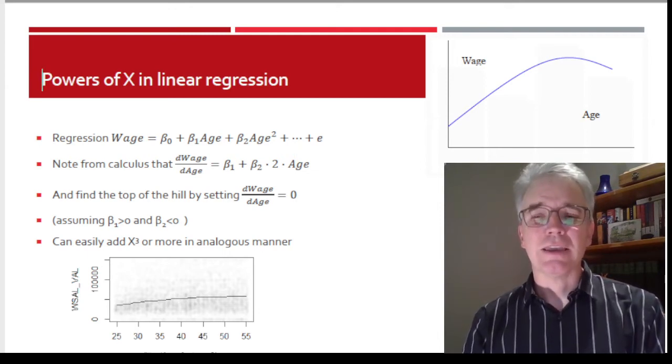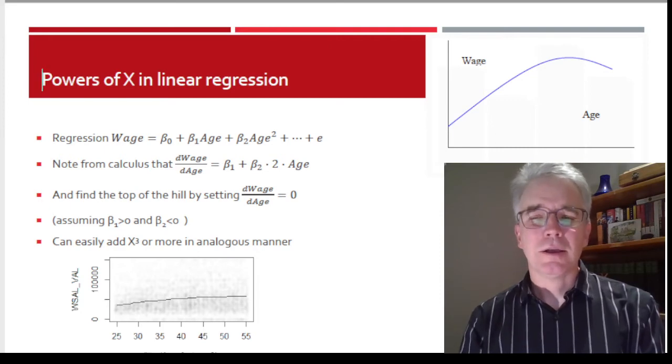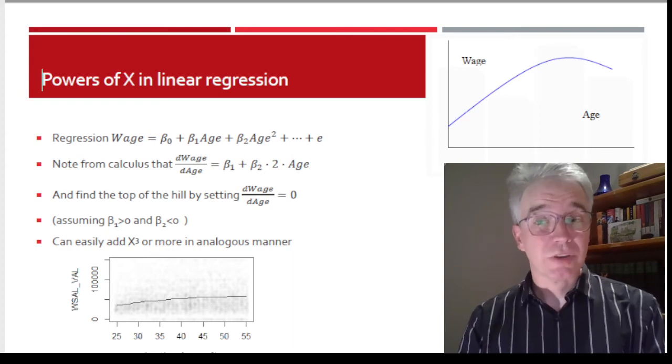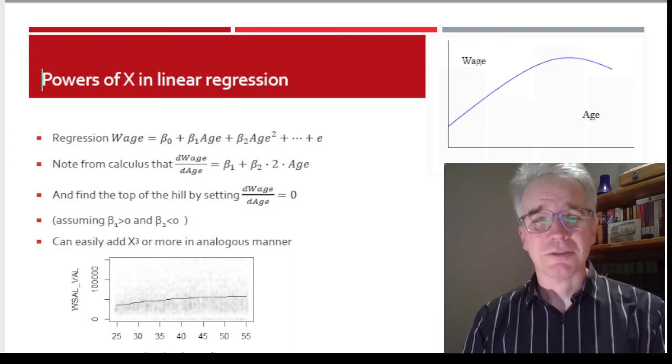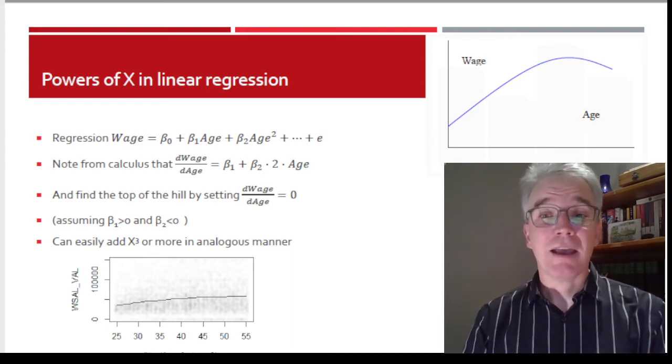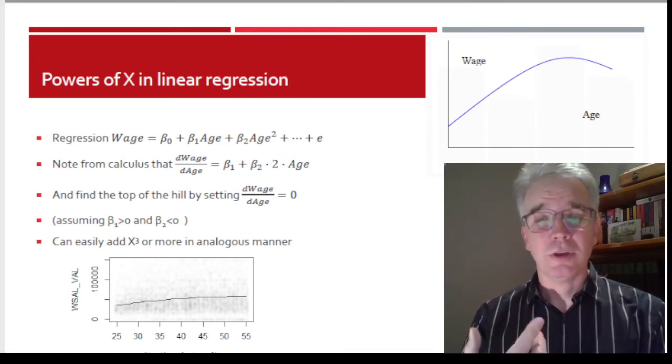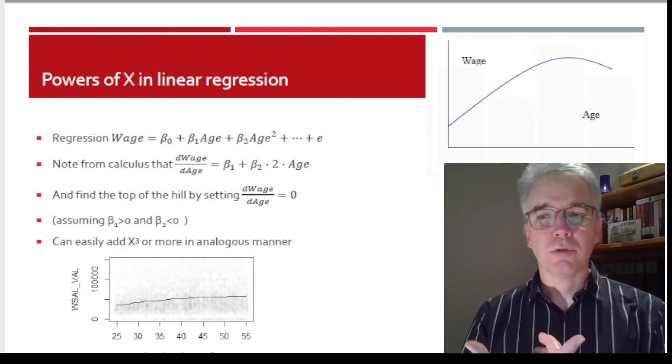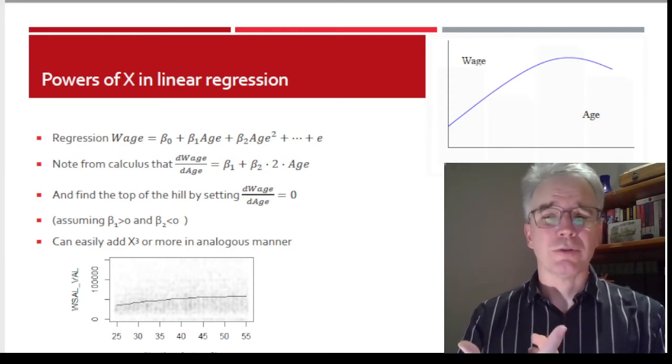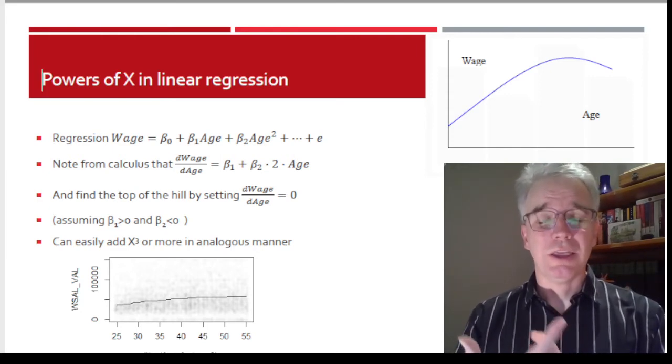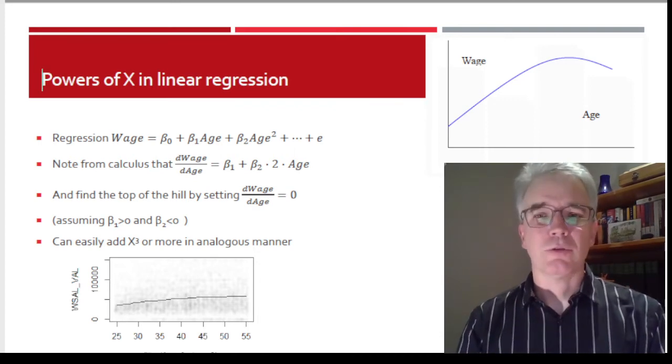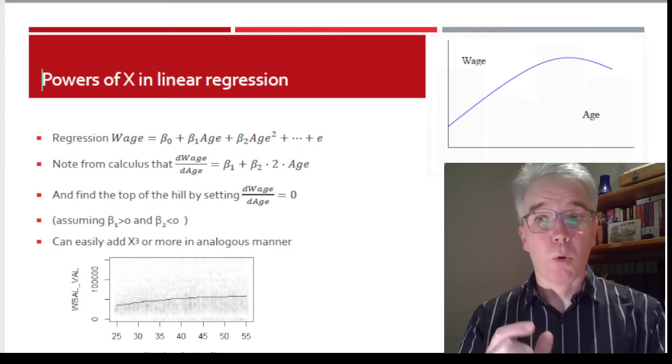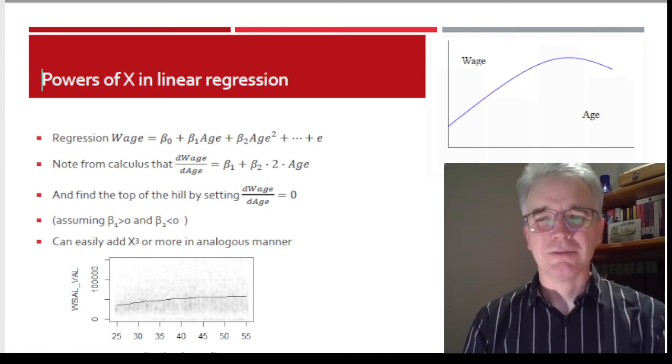Later on, maybe we'll talk about some alternative specifications or ways of giving even more flexibility. But you can make a case, and more specifically, you can do statistical tests. If I have H, H², H³, H⁴, I can test whether the coefficients on those higher order polynomial terms are jointly equal to zero.